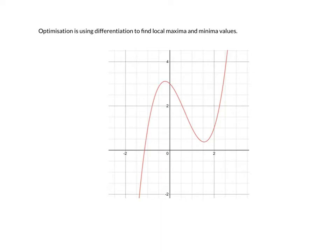Optimization uses differentiation to find local maximum and minimum values. Over here I've drawn a cubic graph. On this cubic graph for the range I've drawn, you can see that there's a global maximum and a global minimum. But there are also two turning points. One is a local maximum where the graph changes from increasing to decreasing, and the other turning point is a local minimum where the graph changes from decreasing to increasing.